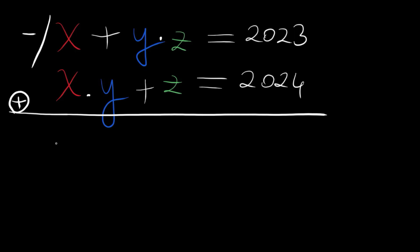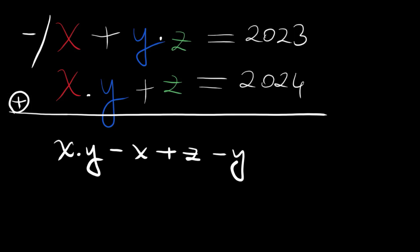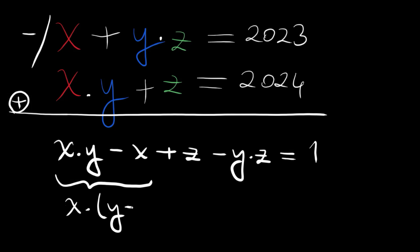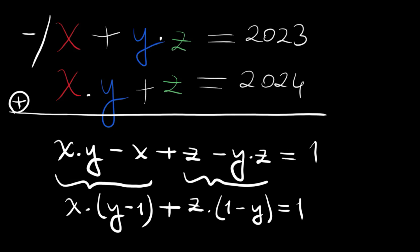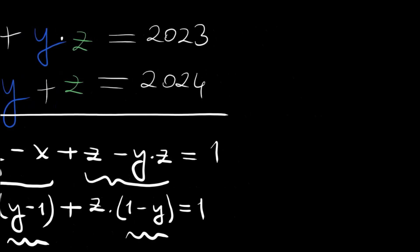After subtracting we have xy minus x plus z minus yz equals 1. This is our first step. Grouping these terms, we have x times (y minus 1) plus z times (1 minus y) equals 1. Note that y minus 1 and 1 minus y are similar but not the same — let's make them the same.